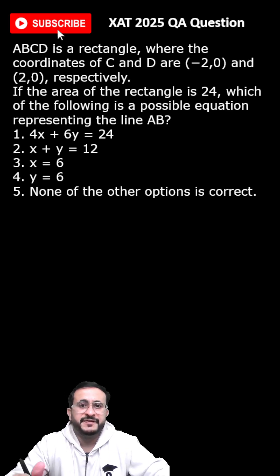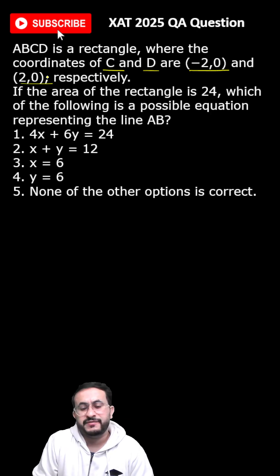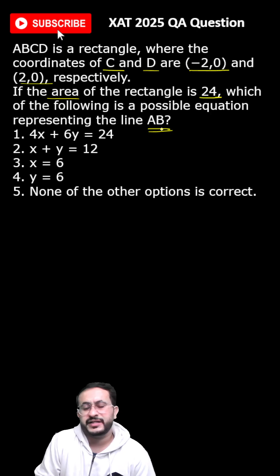This question from XAT 2025 says that ABCD is a rectangle where the coordinates of C and D are (-2,0) and (2,0) respectively. The area of the rectangle is 24. Which of the following is a possible equation representing the line AB?